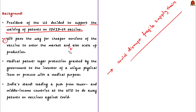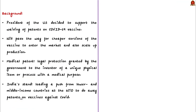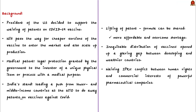A medical patent is legal protection granted by the government to the inventor of a unique physical item or process with a medical purpose — it prevents competitors from making, using or selling the patented technology for a limited period of time. India has been leading a push from lower and middle income countries at the WTO to do away with patents on COVID vaccines, a demand also raised by human rights bodies and global advocacy groups. However, appeals to remove IPR have been unsuccessful so far in the face of lobbying by powerful pharmaceutical companies.